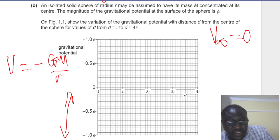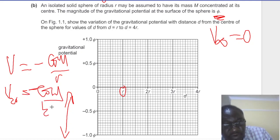Now we take for instance, we are told that the potential at the surface is phi. So which means at the surface, we are going to have phi. That is when the distance d is equal to r. So which means when our distance is now 2r, our V at that position 2r will be equal to minus G M over 2r. Which means it's going to be half the original potential, so it's going to be 0.5 phi.